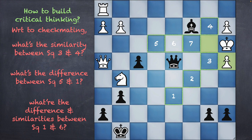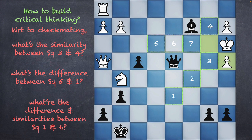For instance, in our class we typically ask students: what are the similarities between squares three and four with respect to checkmate? The similarity is that in both cases the queen would get captured by the king. What's the difference between squares five and one? When you give a check from square one the king can escape to four; from square five the king can escape to both three and four. What's the difference and similarity between one and six? The similarity is they're both on the same vertical line — a file as we call it in chess. The difference is when you give a check from one the king can escape to four, but from six he can escape to either three or four. These kinds of questions build critical thinking, and that's how our pedagogy at Zugzwang is developed.